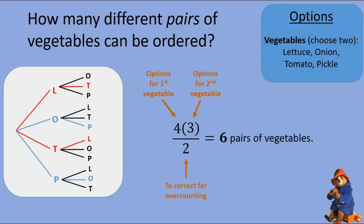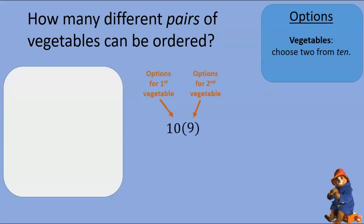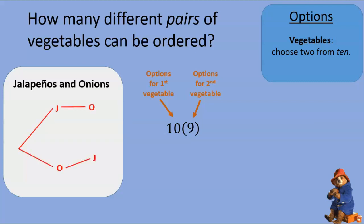Hence, there are actually six pairs of vegetables. Let's vary this: suppose there are ten vegetables from which to choose, and we still pick two. There are ten options for the first and nine for the next, but every pair — like jalapeños and onions — appears twice in the tree (once as jalapeños-onions, once as onions-jalapeños). Dividing by two to correct for over-counting gives us 45 pairs altogether.